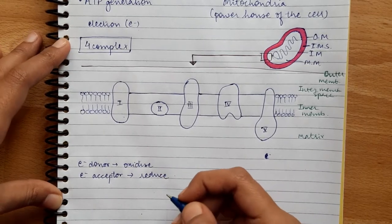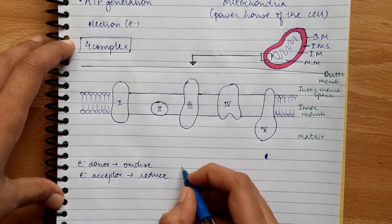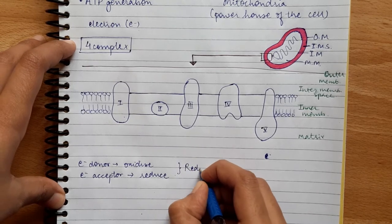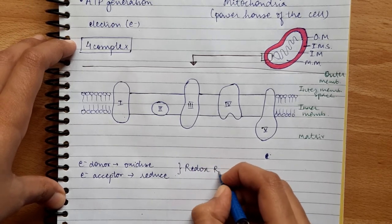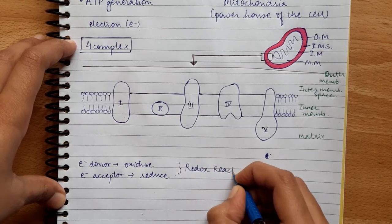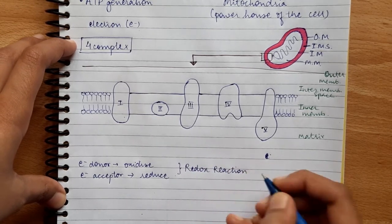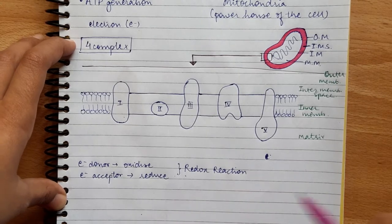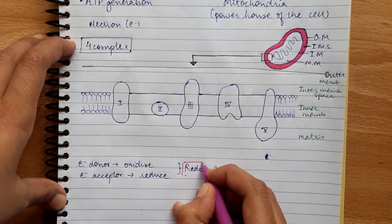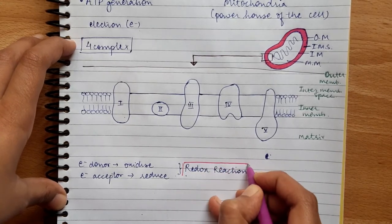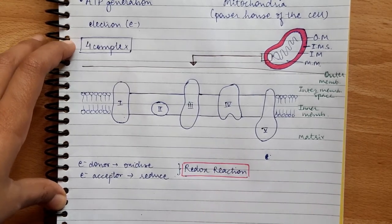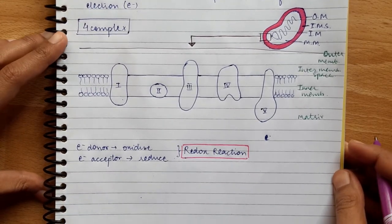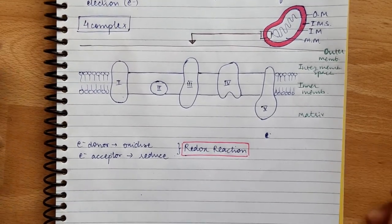Throughout the whole chain you will see oxidation and reduction. The type of reaction occurring throughout the whole chain is a redox reaction — one molecule has accepted electrons and the other has donated them, and then the electrons move further along.